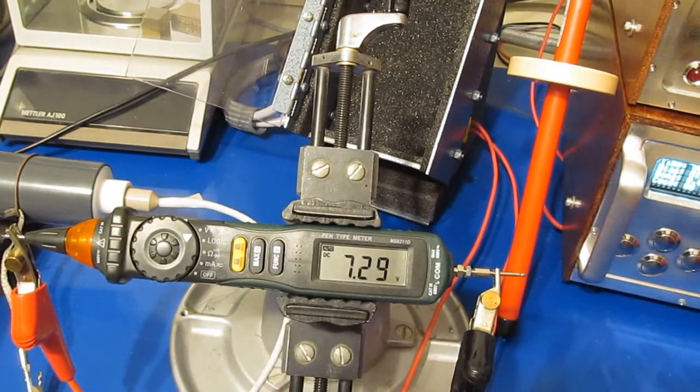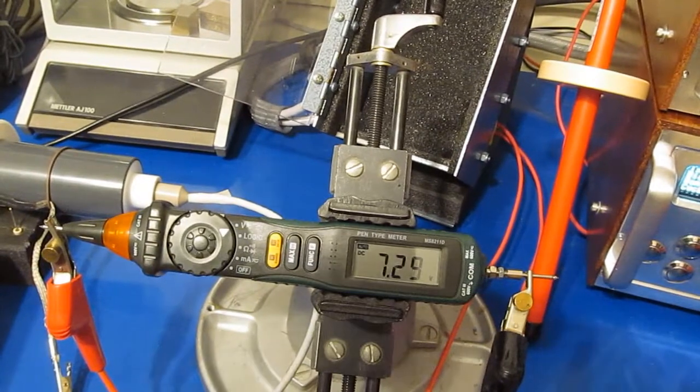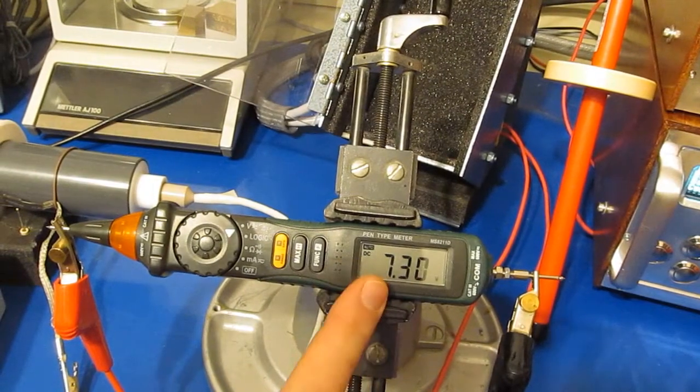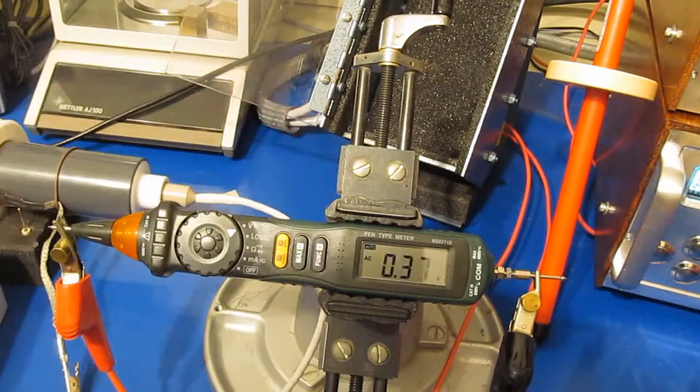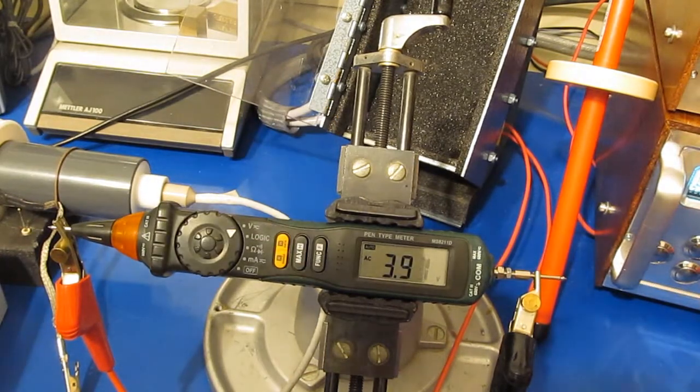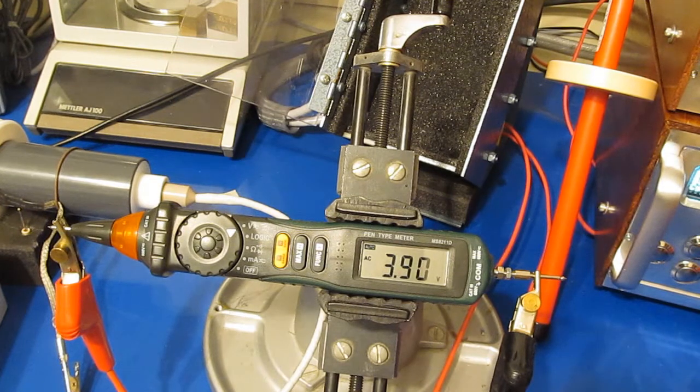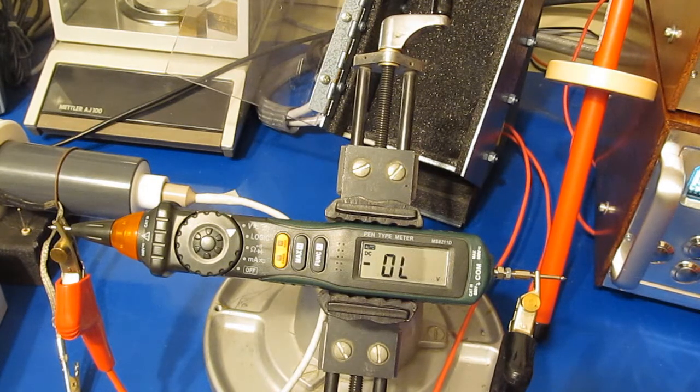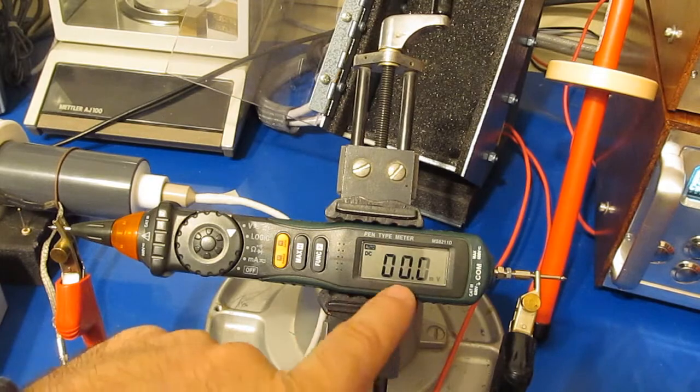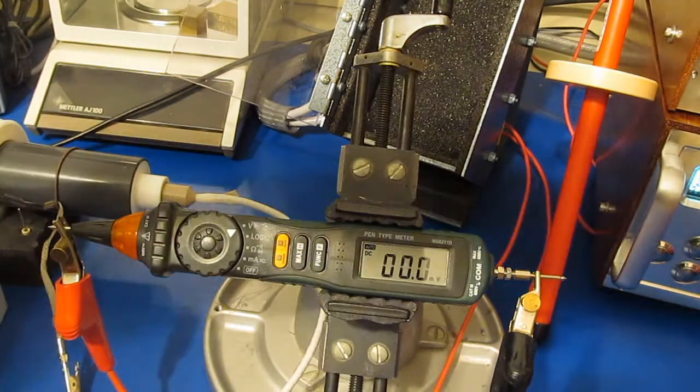So what I've done is I've reprogrammed the generator to put out four and a half thousand volts. And let's just see if this will damage it while reading the AC volt mode. Yeah. So you can see it's breaking down on the inside.